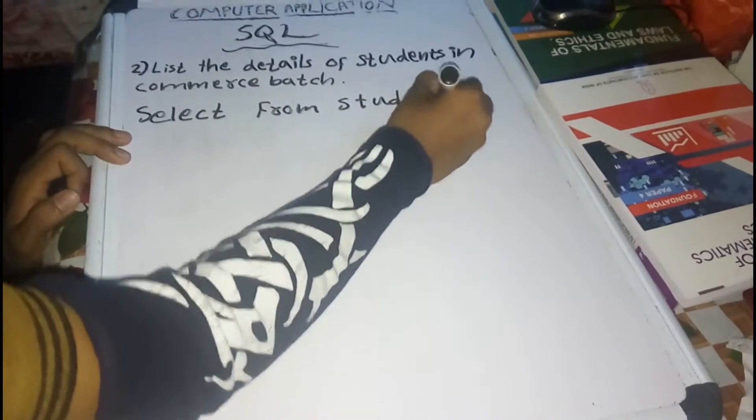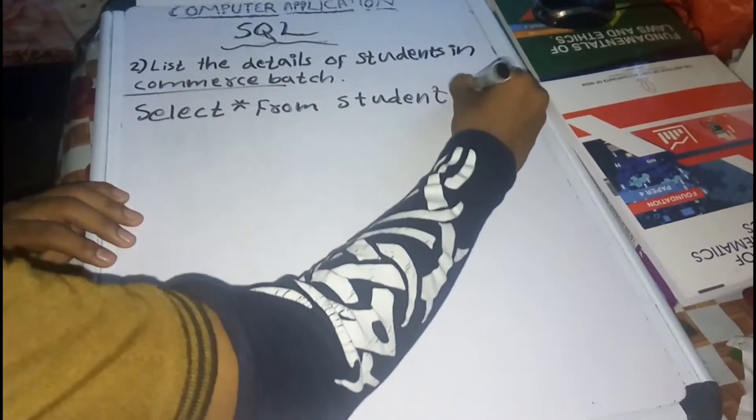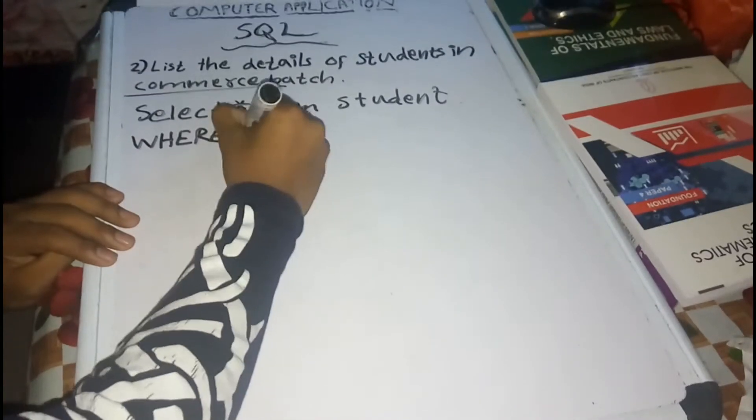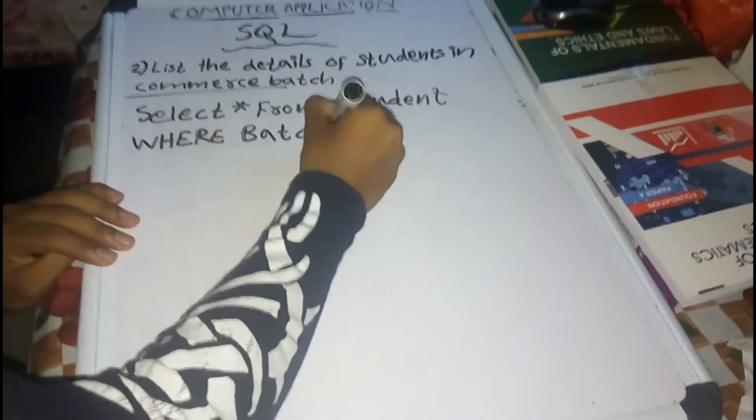SELECT from student. Now if I select from student, we have to do commerce. Commerce is commerce. So WHERE — WHERE command. Here WHERE batch is equal to 'commerce' — single quotes — semicolon.